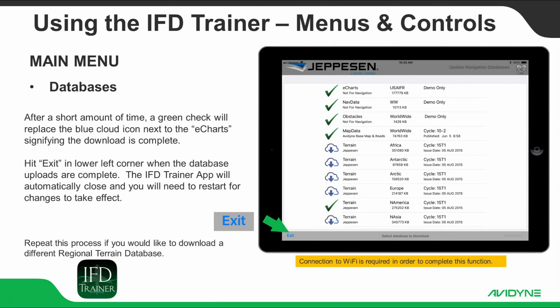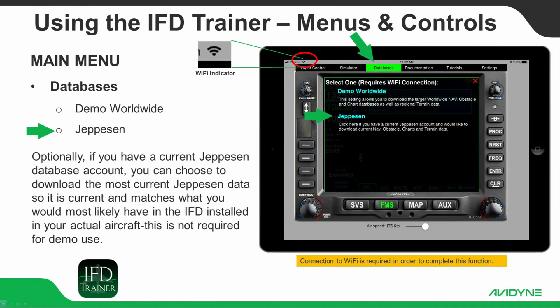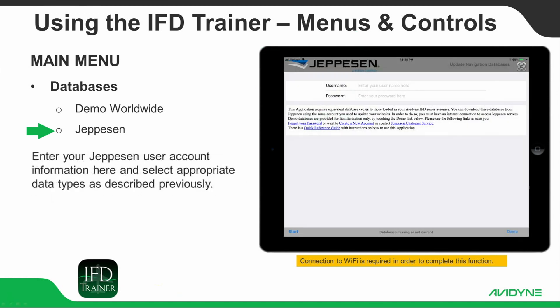The IFD Trainer app will automatically close and you will need to restart the app for changes to take effect. Optionally, if you have a current Jeppesen database account, you can choose to download the most current Jeppesen data so it is current and matches what you would most likely have in the IFD installed in your actual aircraft. This is not required for demo use. Enter your Jeppesen user account information here, then select the appropriate data types as described previously.